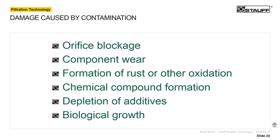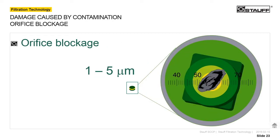Orifice blockage is easy to picture. Different pumps, servo valves, and sensor lines have very small orifices — 5, 6, or 10 microns. If a piece of debris gets stuck in one and plugs it up, the valve doesn't work anymore. That's one way contaminants can hurt the system.